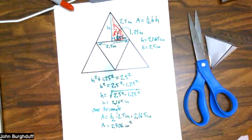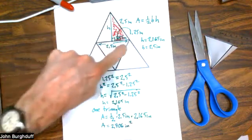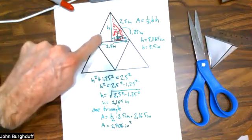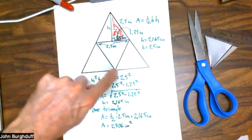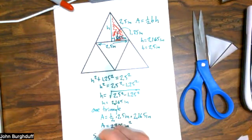Now again, that's the area simply of one of the triangles that is one of the faces of this tetrahedron. There's four of them, and they're all congruent.